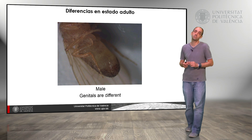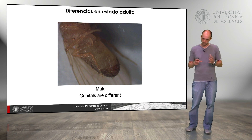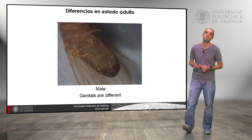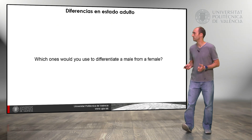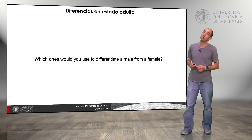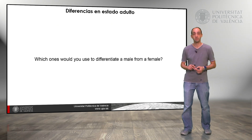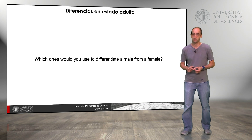There is a fifth difference: if the insect is laying an egg, it is of course a female, as you can see sometimes. You should now think about which difference you would use to distinguish a male from a female in adult stage.